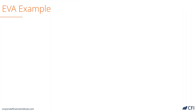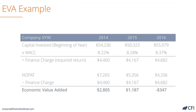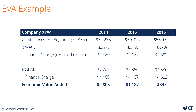Let's look at an example to pull it all together. If we start with the capital that the company has invested at the beginning of each year and multiply that by the weighted average cost of capital, which is the required rate of return — in this case we're calling it the finance charge — that's the minimum amount that the company has to generate to satisfy investors.